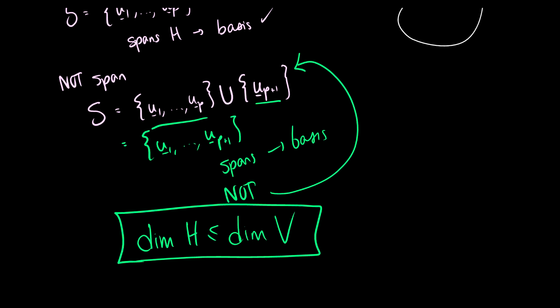If H equals V, then clearly the dimension of H equals the dimension of V. But H can never be greater than V, so the dimension of H is never going to be greater than the dimension of V. That is the theorem.